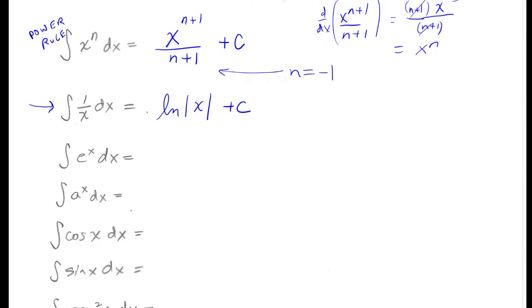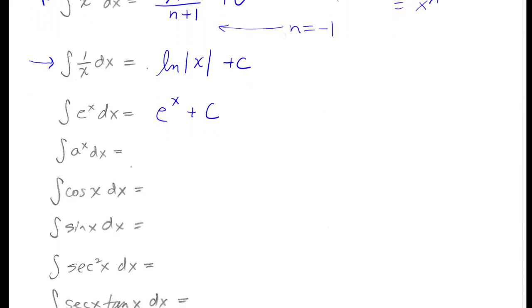If you want to integrate e to the x, well what function gives you e to the x as a derivative? That's easy, that's e to the x plus C. What about a to the x? Well that would have to come from taking the derivative of a to the x. But when you take the derivative of a to the x, you get an ln a multiplied by it. So I would need 1 over ln a as a correction factor to take care of the ln a that's going to come out, and then I still need my plus C.